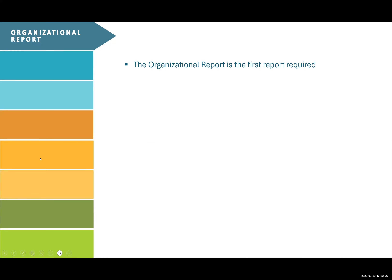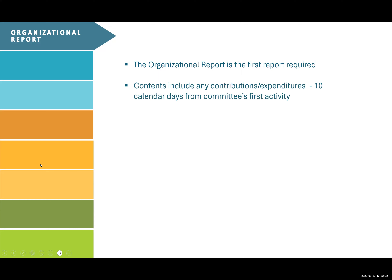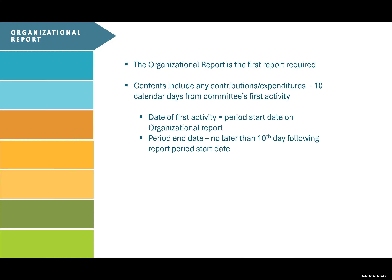The organizational report is the first report required of an over-threshold committee. The contents of the organizational report should include any contributions received or expenditures made within 10 calendar days from the committee's first activity. The date of that first activity establishes the period start date on the organizational report. The period end date for an organizational report may be no later than the 10th day following that report's period start date. The reporting forms due are determined by transactions that occurred within the period start and period end dates of this organizational effort.